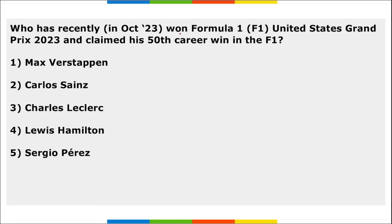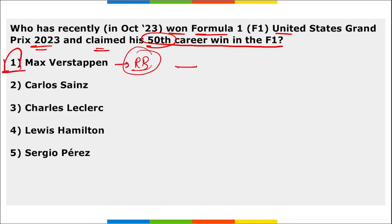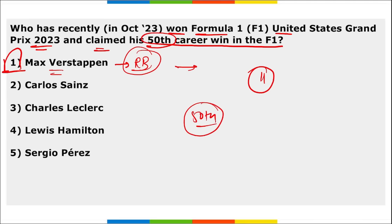Next, who recently won the F1 USA Grand Prix 2023 and claimed their 50th career win in F1 racing? It is Max Verstappen, who drives for Red Bull. He also holds the record for maximum consecutive wins — that is 11. He has won the USA Grand Prix 2023 and his 50th career win in F1.